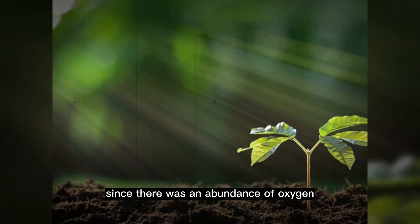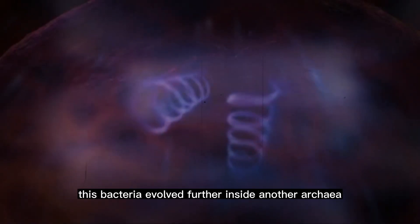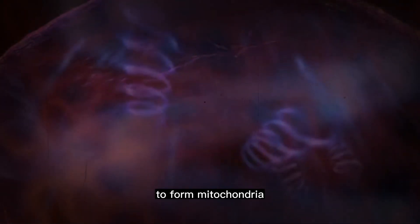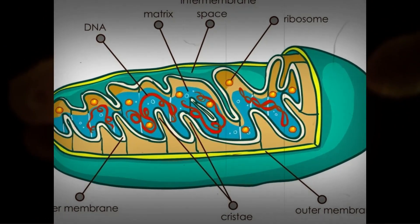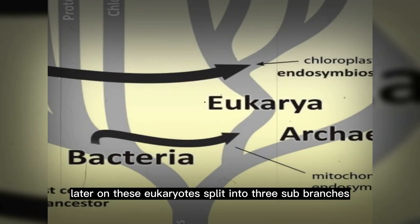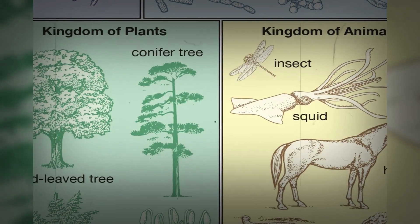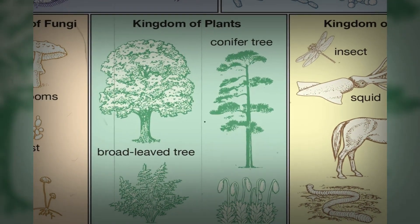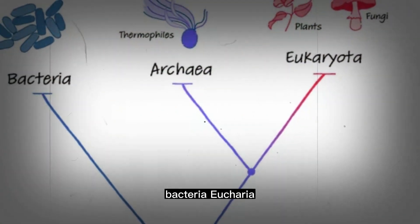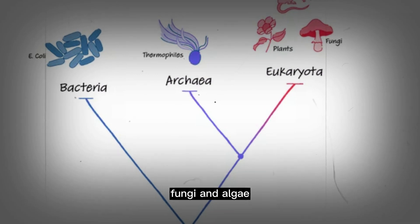On the other hand, since there was an abundance of oxygen in the atmosphere, an ancient bacteria decided to use this available oxygen to generate energy. This was the beginning of aerobic respiration. This bacteria evolved further inside another archaea to form mitochondria, now known as the powerhouse of a cell — an important element in all eukaryotes. Later on, these eukaryotes split into three sub-branches: the animal kingdom, the fungi kingdom, and the algae kingdom, also called Protista. Initially, there were three branches: bacteria, eukaryotes, and archaea. Then eukaryotes branched out into plants, animals, fungi and algae.